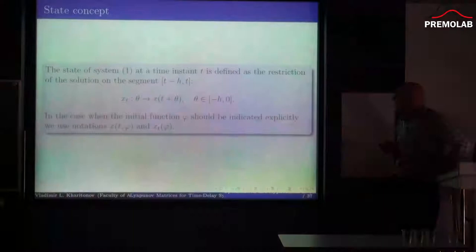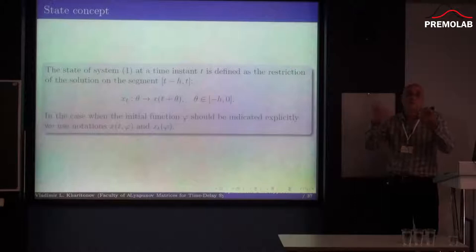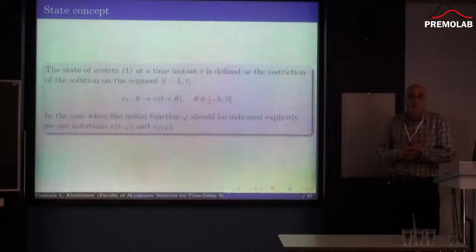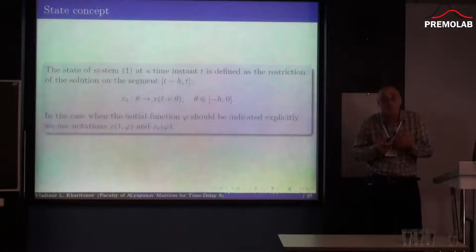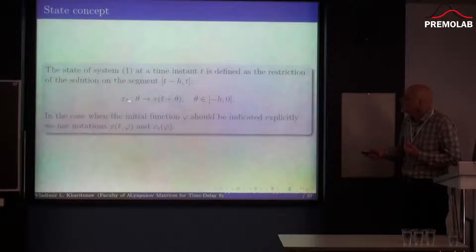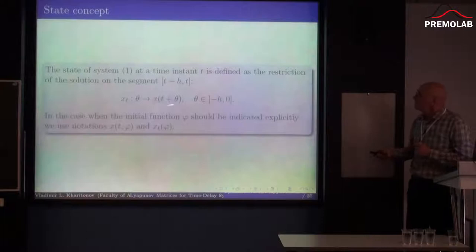A very interesting concept for time delay systems is the state. Normally, if we have a system X-dot equal to F of X, then the state is X of T. For a time delay system, the state is defined as a segment of the trajectory — it is X sub T. X sub T is not the same as X of T; X sub T is a function defined for theta between -H and 0. This is the concept of the state.